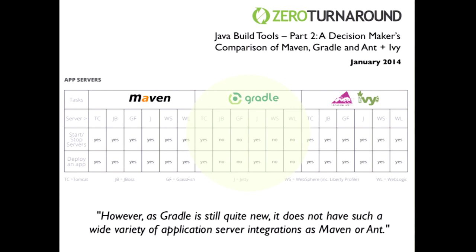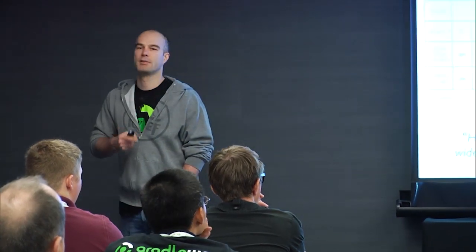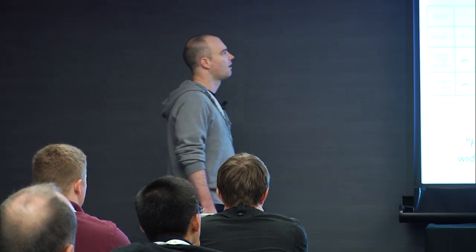Hans talked about specific studies published by Zero Turnaround, which compared build tools — Ant, Maven, and Gradle — and their features. One of the criteria was the capability of deploying code to application servers: Tomcat, JBoss, Glassfish. Maven does pretty well; it can start, stop servers, and deploy applications. But for Gradle, only Jetty and Tomcat appear supported. Hopefully that's not the full picture — today we'll cover other application servers as well.